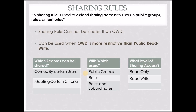Now let's discuss what kind of records can be shared using a sharing rule. We can share records owned by a certain user, or we can share records which meet certain criteria. The recipient users can be users in a public group, or users in different roles or roles and subordinates. We can provide read only access or read write access using a sharing rule.